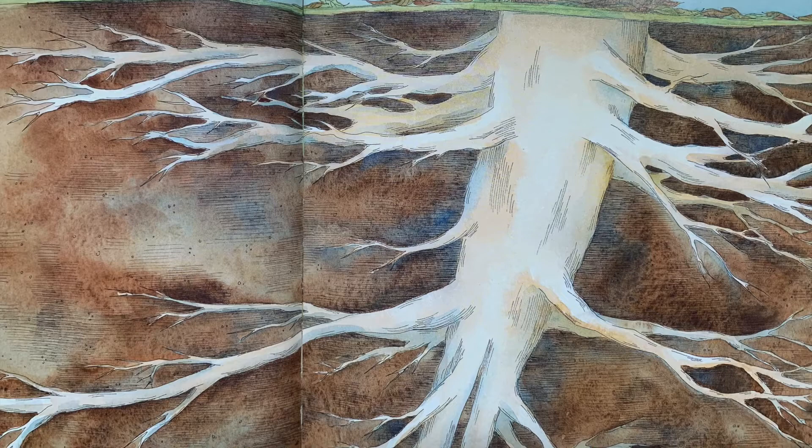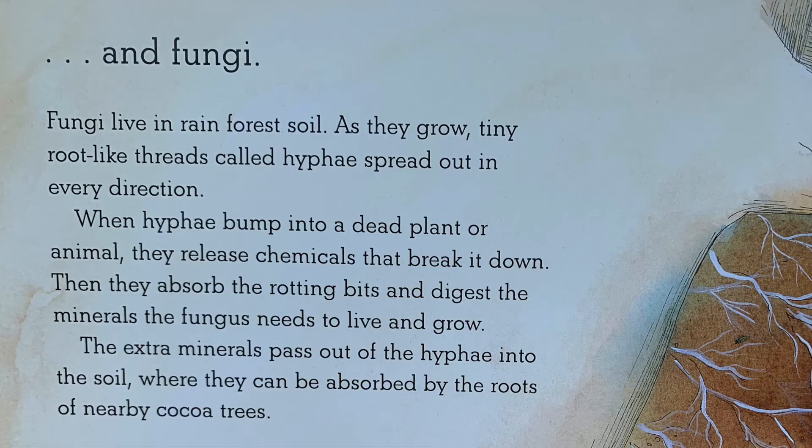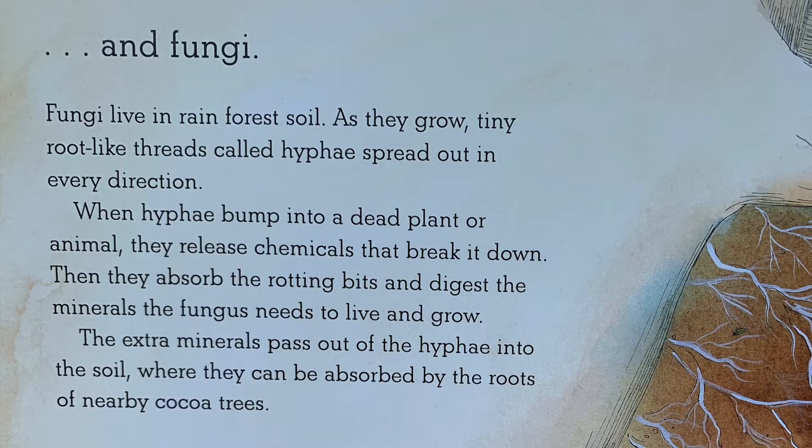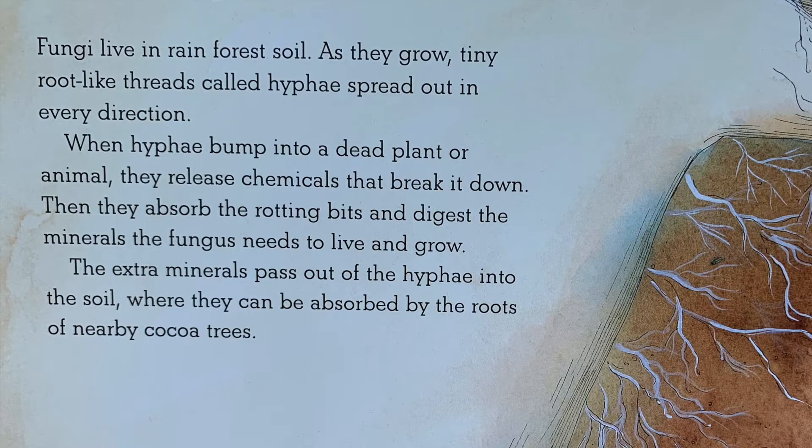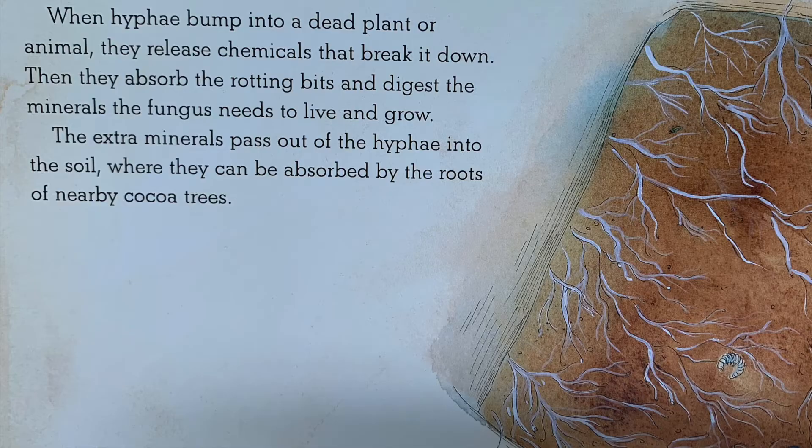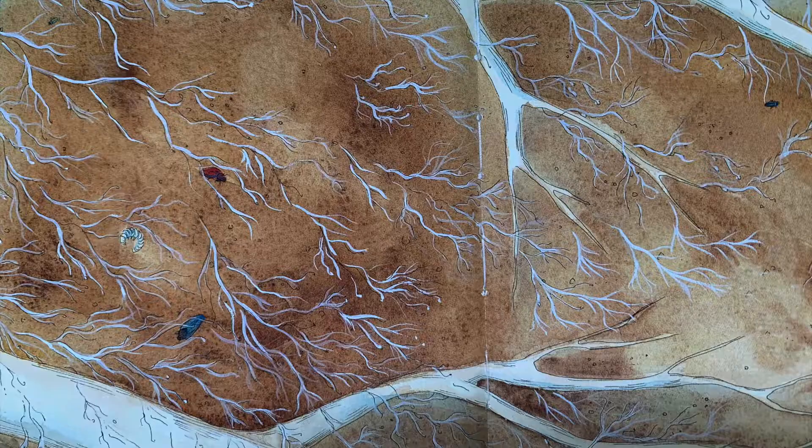Fungi live in rainforest soil. As they grow, tiny root-like threads called hyphae spread out in every direction. When hyphae bump into a dead plant or animal, they release chemicals that break it down. Then they absorb the rotting bits and digest the minerals the fungus needs to live and grow. The extra minerals pass out of the hyphae into the soil, where they can be absorbed by the roots of nearby cocoa trees.